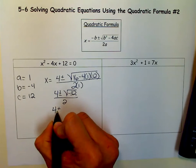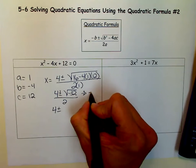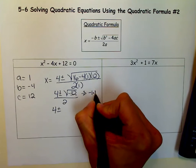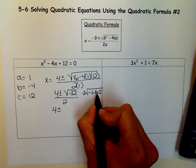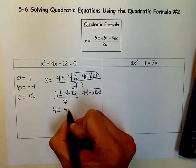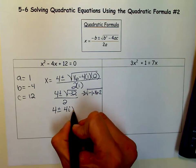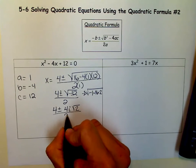So we have 4 plus or minus. Now we know that negative 32 is negative 1 times 16 times 2. So what we do is take the square root of 16, which is 4, and the square root of negative 1, which is i, and then the square root of 2, which we leave in because it's not a perfect square.